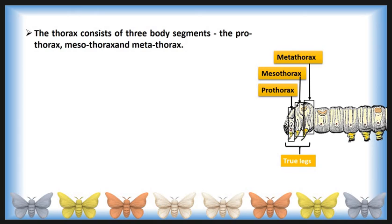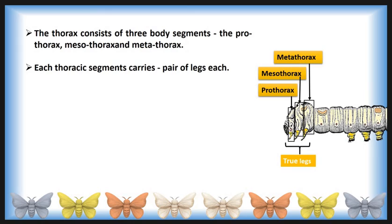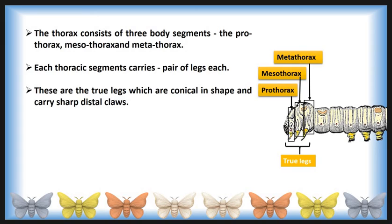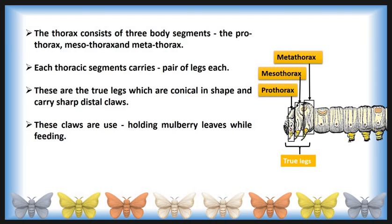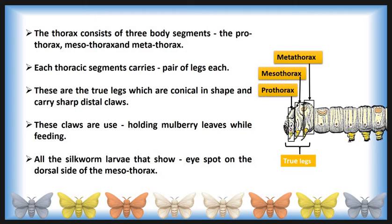The thorax consists of 3 body segments: prothorax, mesothorax, and metathorax. Each of the 3 thoracic segments carries ventrally a pair of legs, each comprising 3 jointed segments. These legs are conical in shape and carry sharp distal claws, which are not used for crawling but for holding mulberry leaves while feeding. All silkworm larvae that show body larval markings carry the so-called eye spot on the dorsal side of the mesothorax.